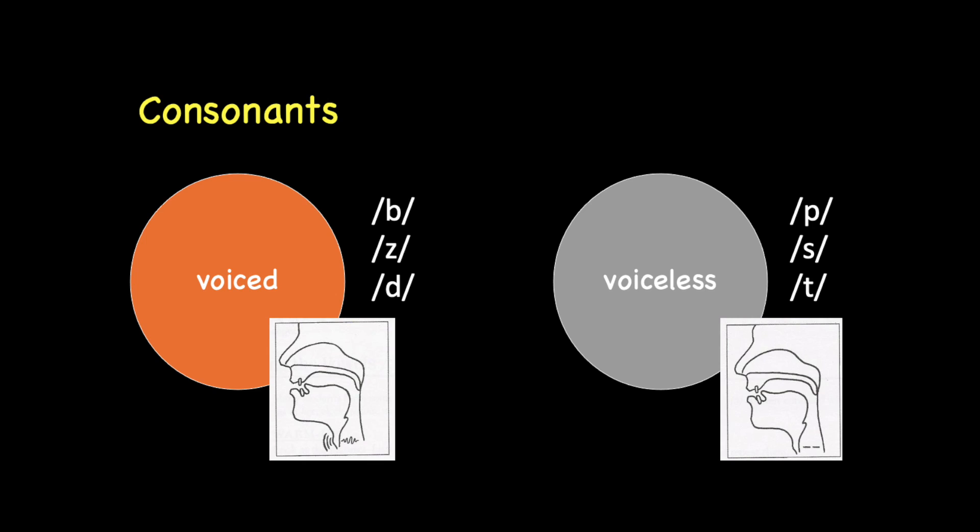Let's try 'd', as in 'dog'. Did you feel vibration? Yes, so 'd', as in 'dog', is a voiced consonant. What about 't', as in 'tennis'? There isn't any vibration, so it's a voiceless consonant.